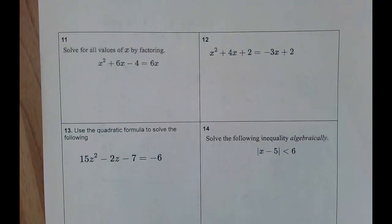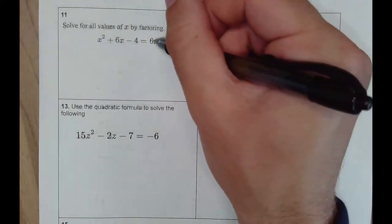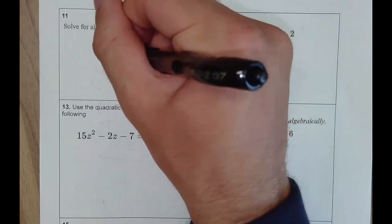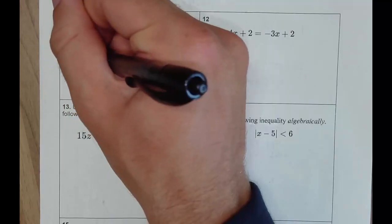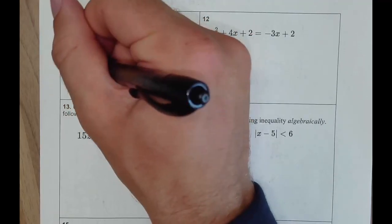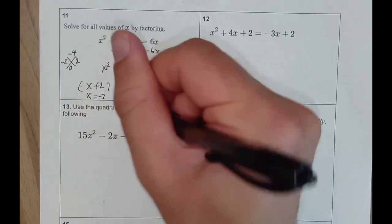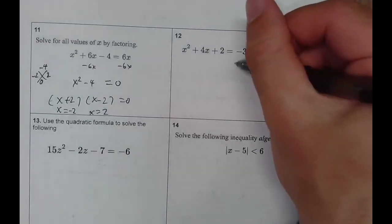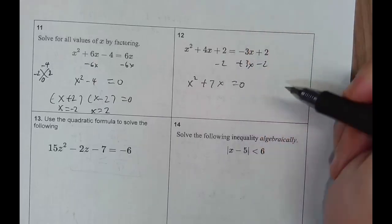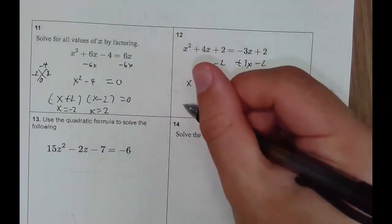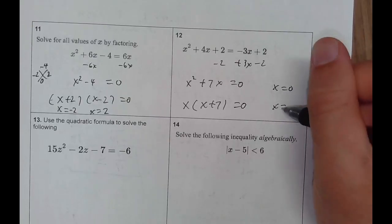Solve for all values of x by factoring. First set equal to zero: subtract 6x to get x² − 4 = 0. Factor as a difference of squares: (x + 2)(x − 2) = 0, giving x = negative 2 and x = 2. For the next one, add 3x and subtract 2 to get x² + 7x = 0. Factor out the GCF of x: x(x + 7) = 0, giving x = 0 and x = negative 7.